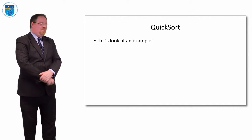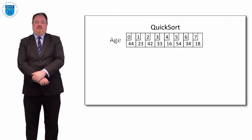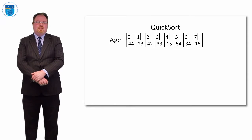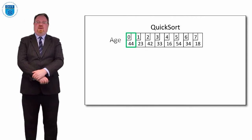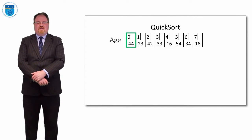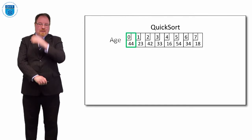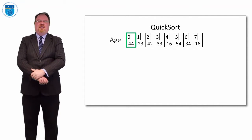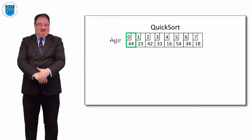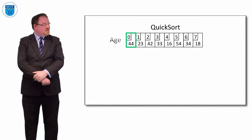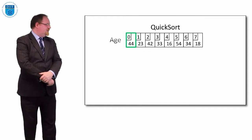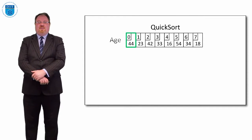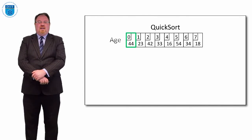Let's look at an example. Here's our array. Let's pick our pivot as being 44, the first element of the array. Just to note — just because we picked the first element doesn't mean that will be the smallest element; in fact it almost certainly won't be. So we randomly pick the first value, its value is 44, and it's kind of towards the middle of the array.